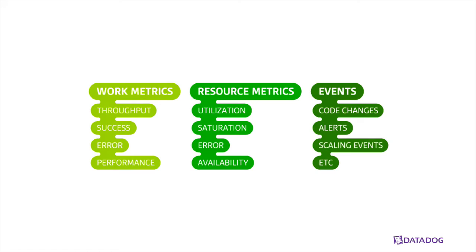Similar to resource metrics, there are events. Events include code changes — when I commit to GitHub, that's an event; when I deploy using Jenkins, that's an event; when I create or destroy a Docker container, that's another event. Starting, stopping, or restarting an NGINX server because of a configuration change — more great events. These also provide additional context to the work metrics.